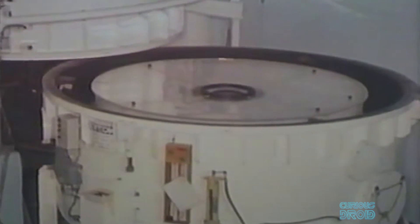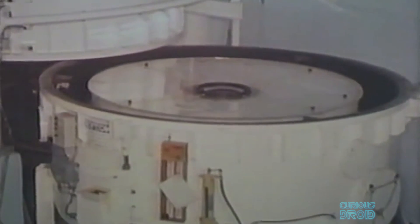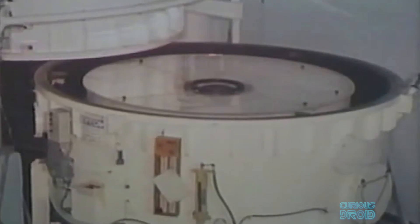Behind the scenes, the polishing and testing of the primary mirror was underway. Because Hubble's mirror was an aspherical design, it required special apparatus to check its quality known as a null corrector.